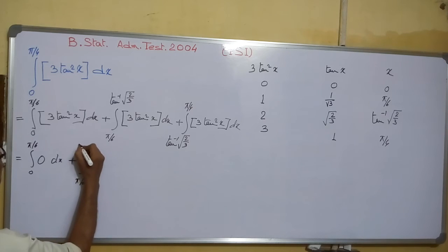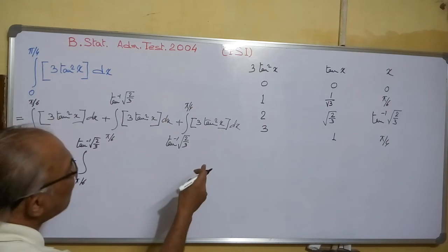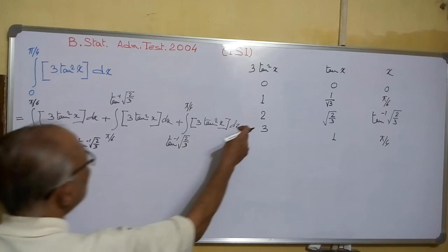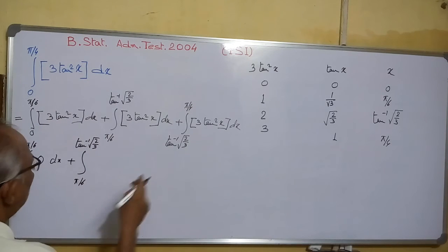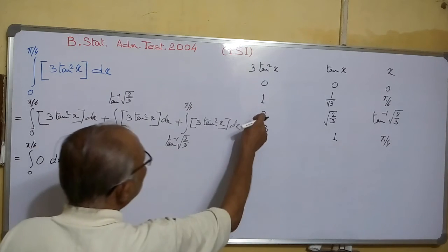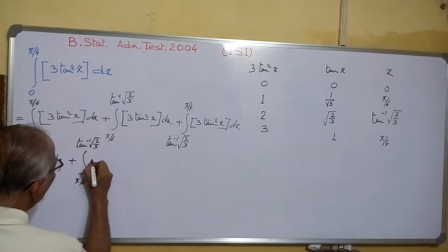Plus π/6 to tan⁻¹(√(2/3)). Here, 3tan²x is between 1 and 2, it is always 1. So it is 1 dx.